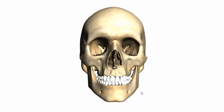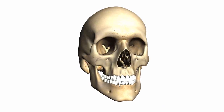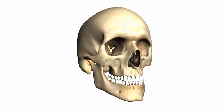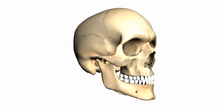This is a short tutorial on the mandible. The mandible consists of a few parts. You've got the anterior part, which is the body of the mandible. You've got the angle of the mandible, and you've got the posterior vertical part, which is the ramus of the mandible.